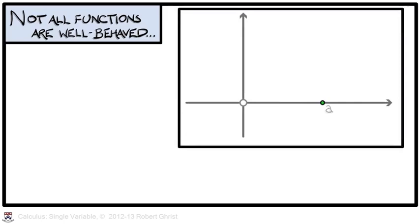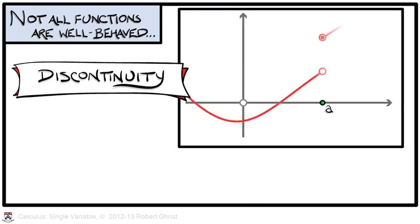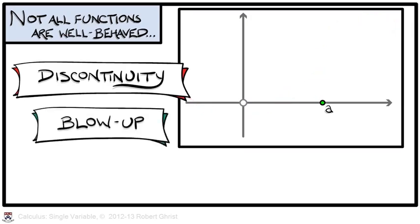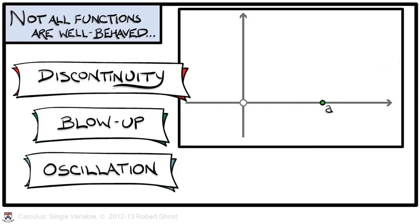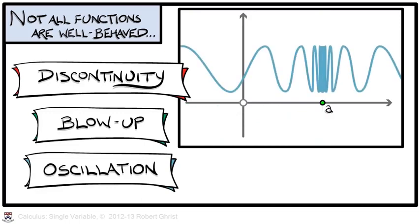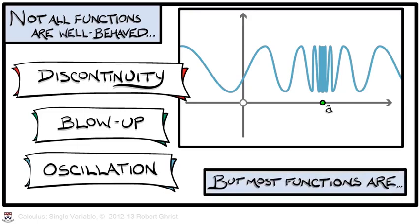To be sure, not all limits exist, and not all functions are well behaved. There are several ways in which things can go wrong. You could have a discontinuity at a function. The limit would not exist at that point. You could have what is called a blow-up. That is, the function goes to infinity as x gets closer and closer to a. Or, worse still, the limit can fail to exist because of an oscillation, where the function oscillates so badly that the limit at a does not exist.